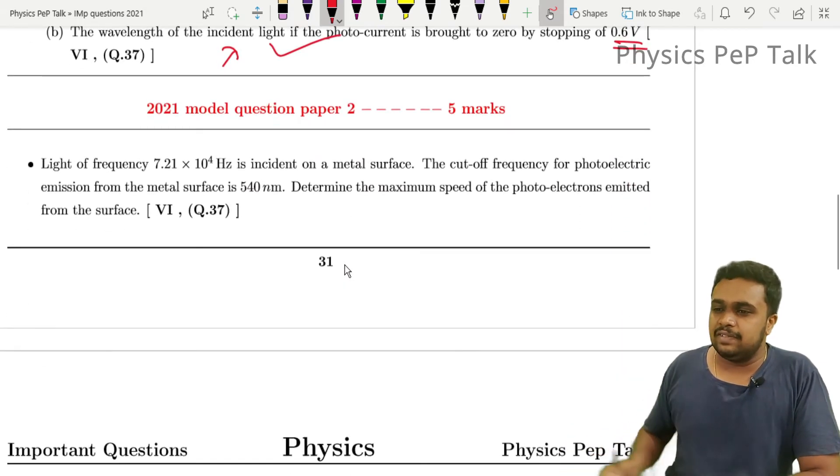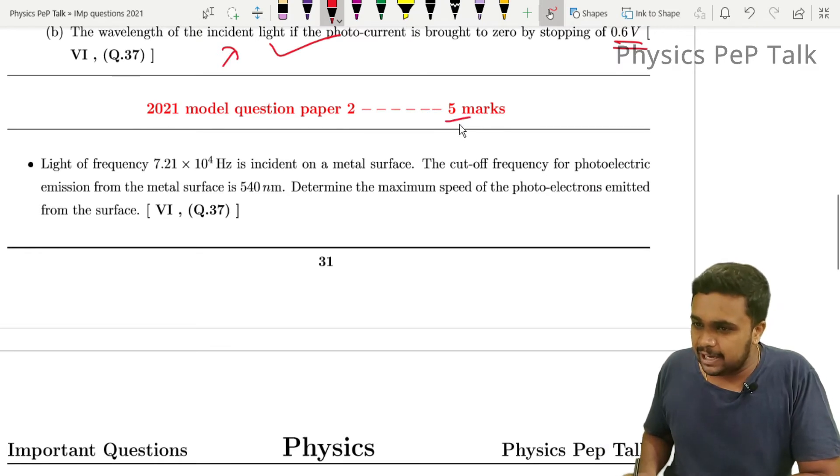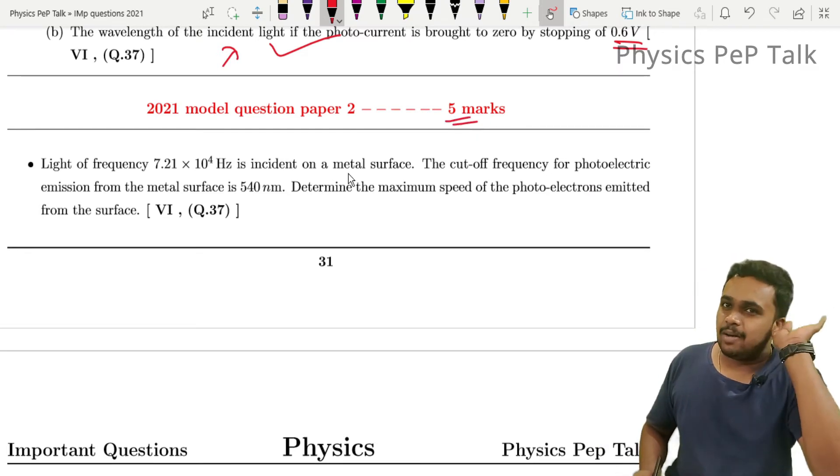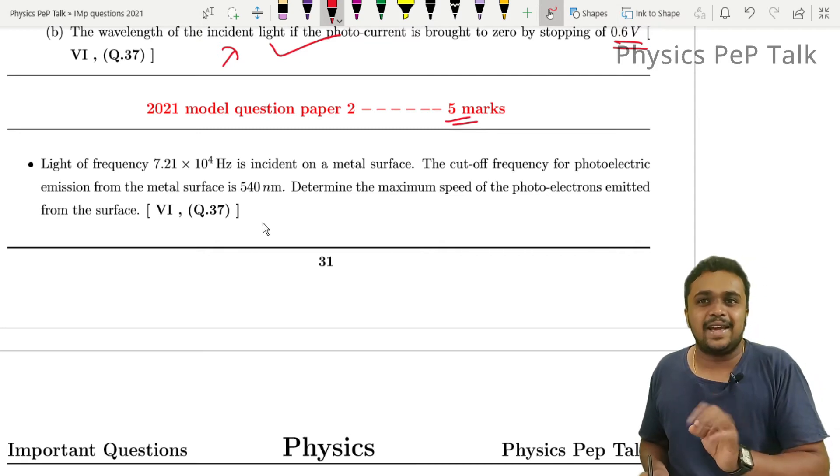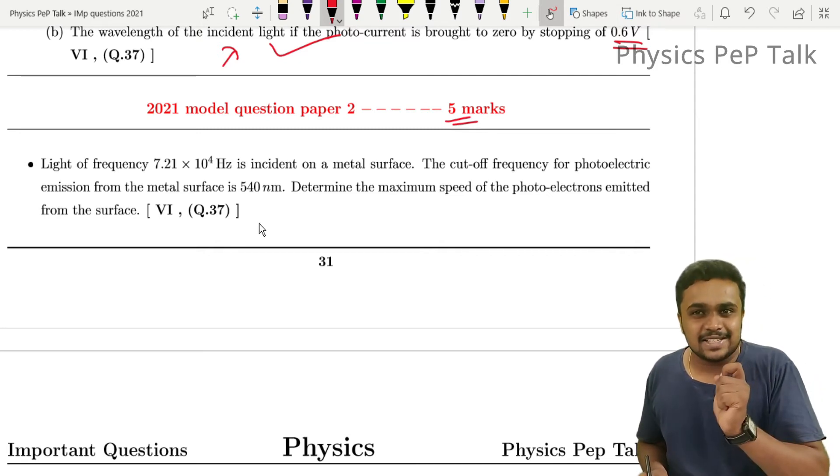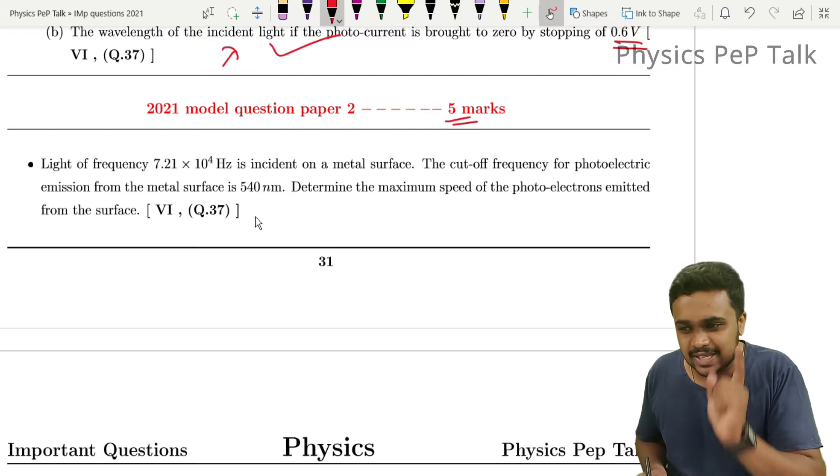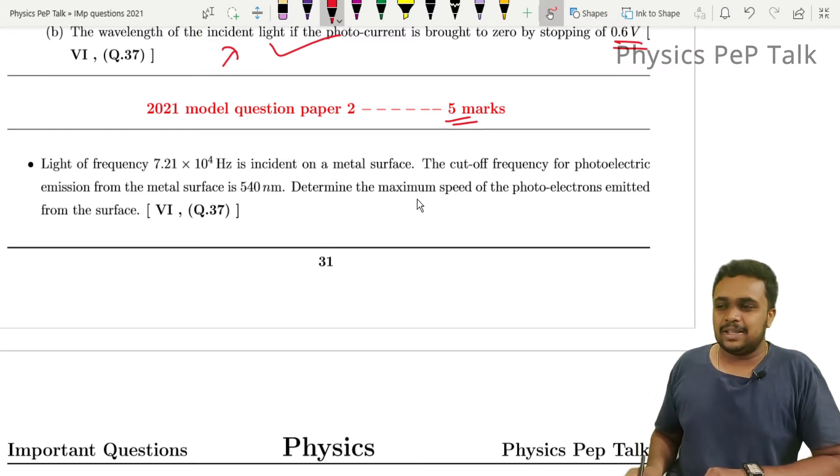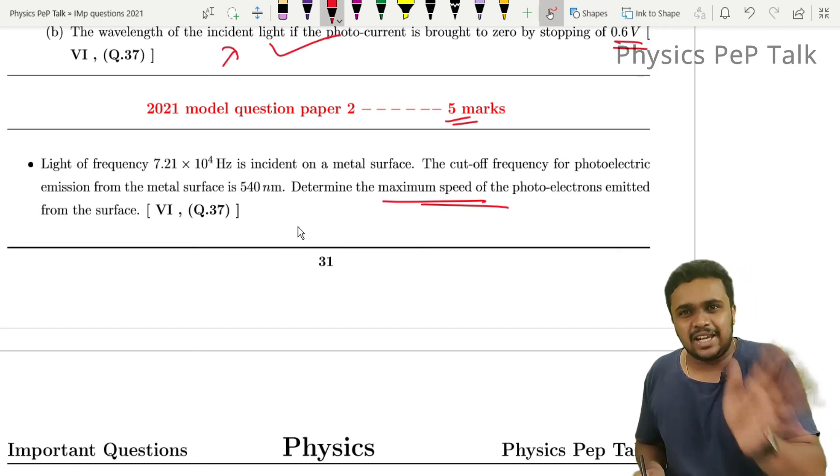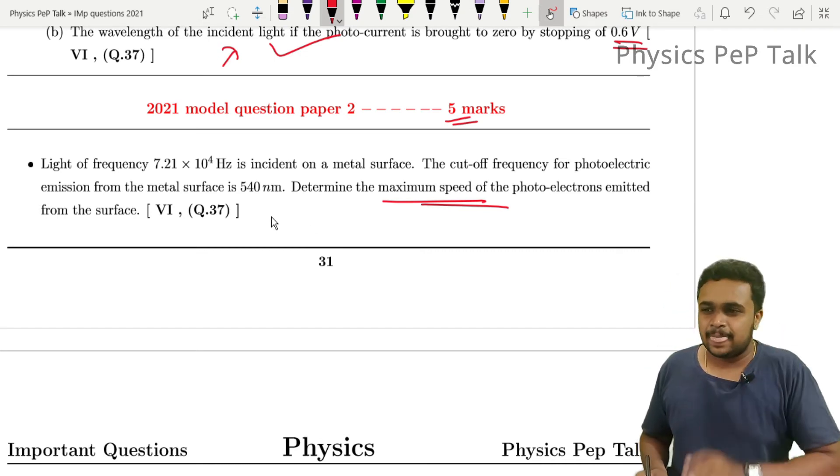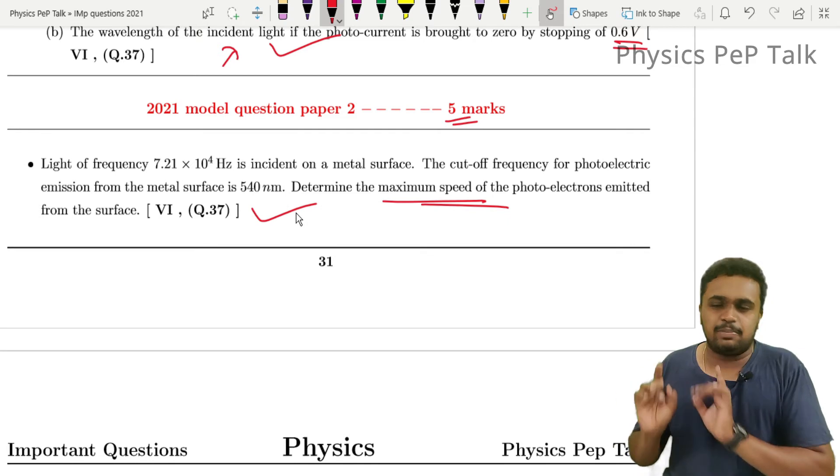2021 model paper 2. It is a problem that you have to solve. Most probably the problem will be solved, and that problem will be very easy. You guys should solve this problem. Determine the maximum speed of photoelectron, the velocity. Kinetic energy of the photoelectrons should be calculated by using Einstein's photoelectric equation. You can solve this type of problem as well.